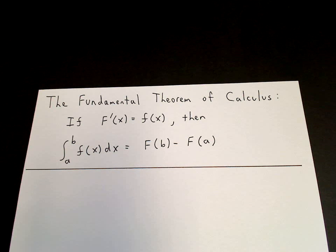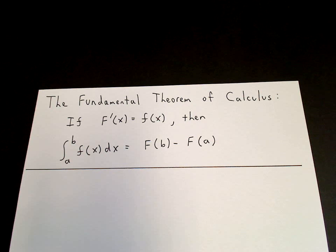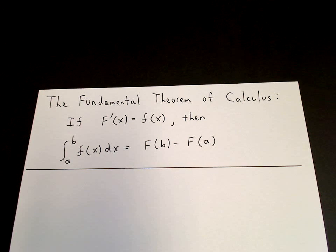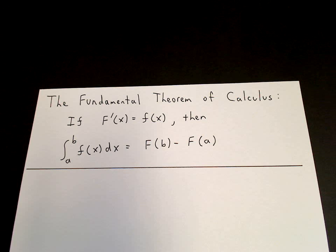I want to derive the fundamental theorem of calculus in the form where if capital F prime of x equals little f of x, where prime denotes the derivative, then the integral from a to b of little f of x dx is equal to capital F of b minus capital F of a. This is a very important result which gives a relationship between the derivative of a function and its integral, and it teaches us how to integrate functions by finding antiderivatives. Capital F is called the antiderivative of the function little f of x.